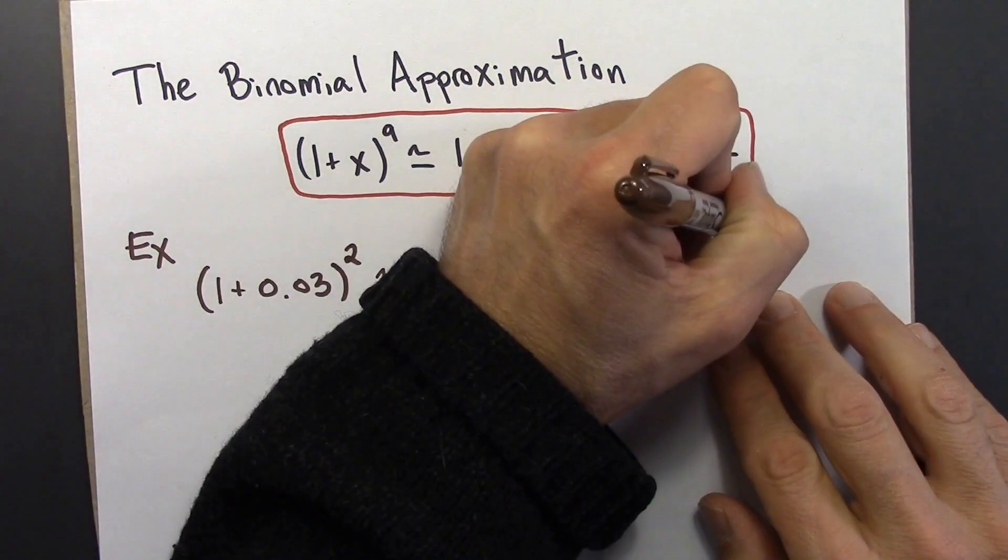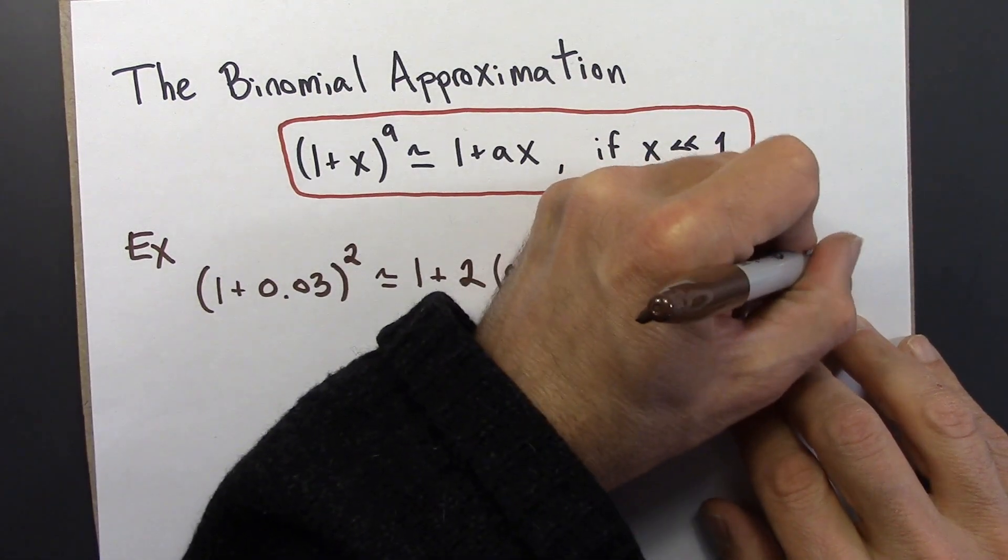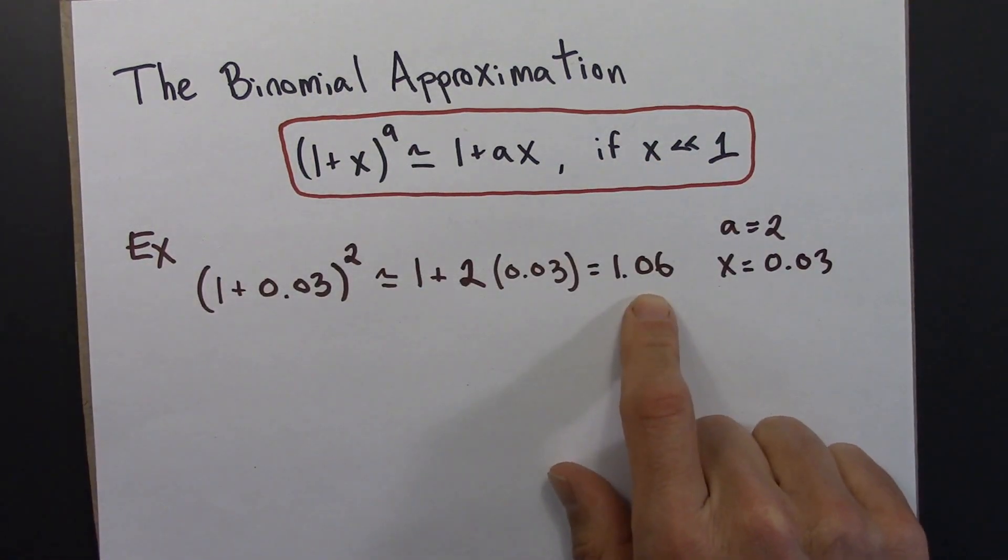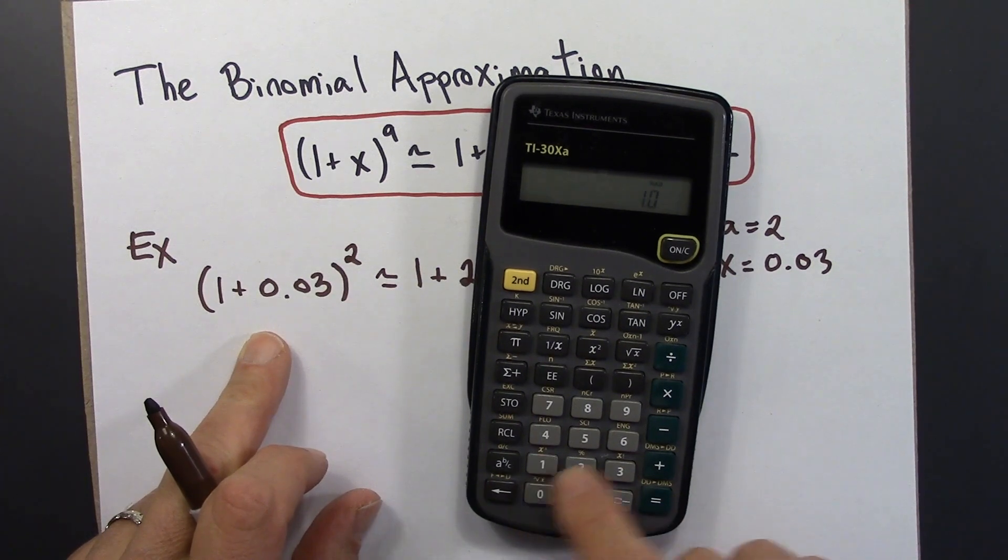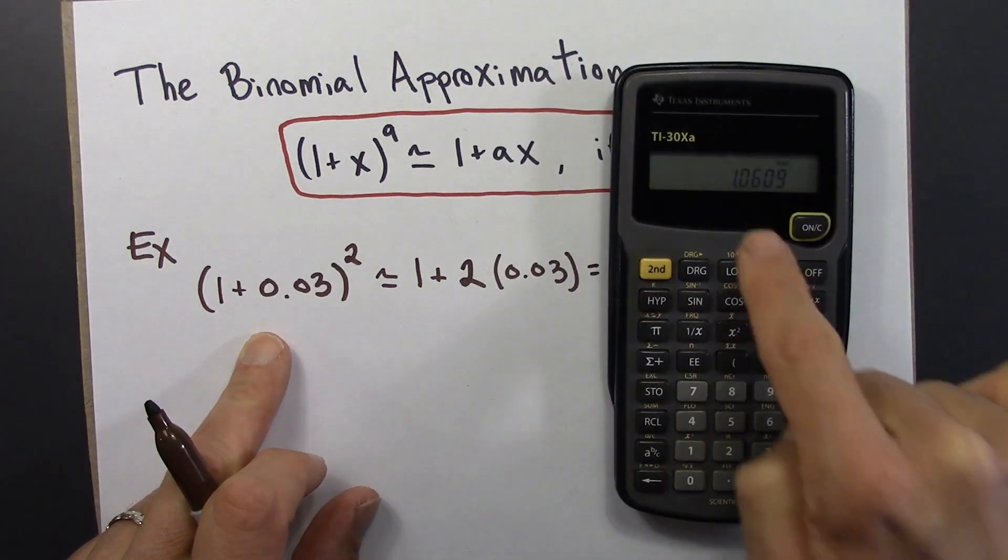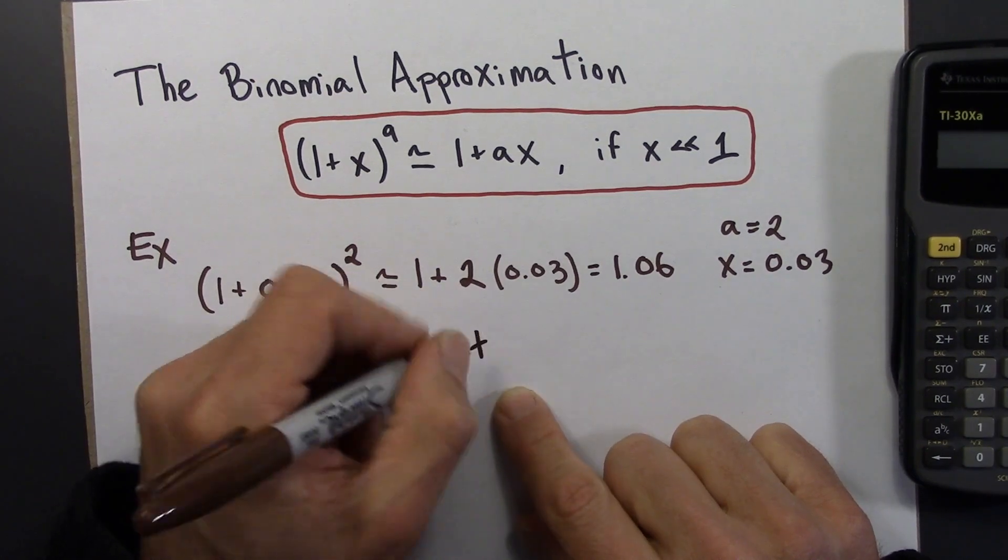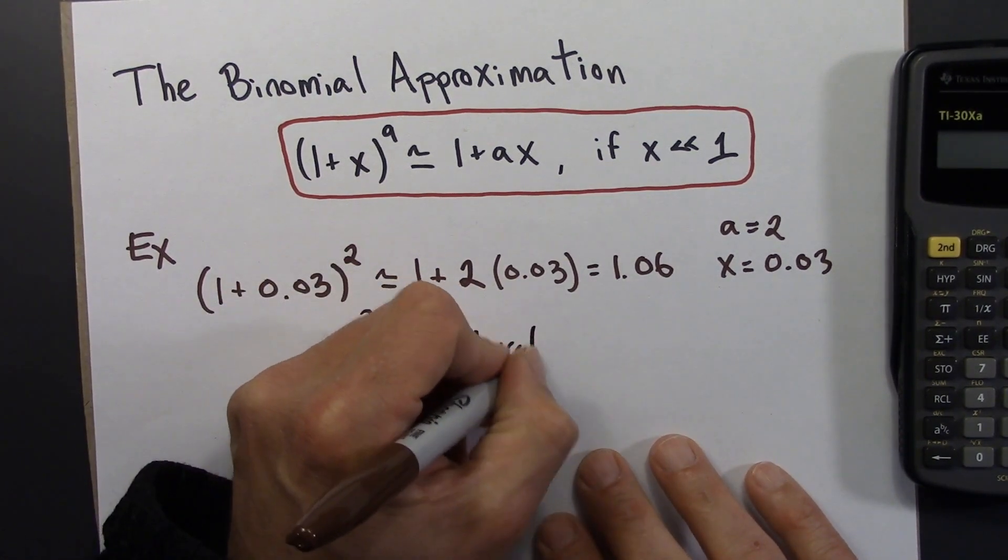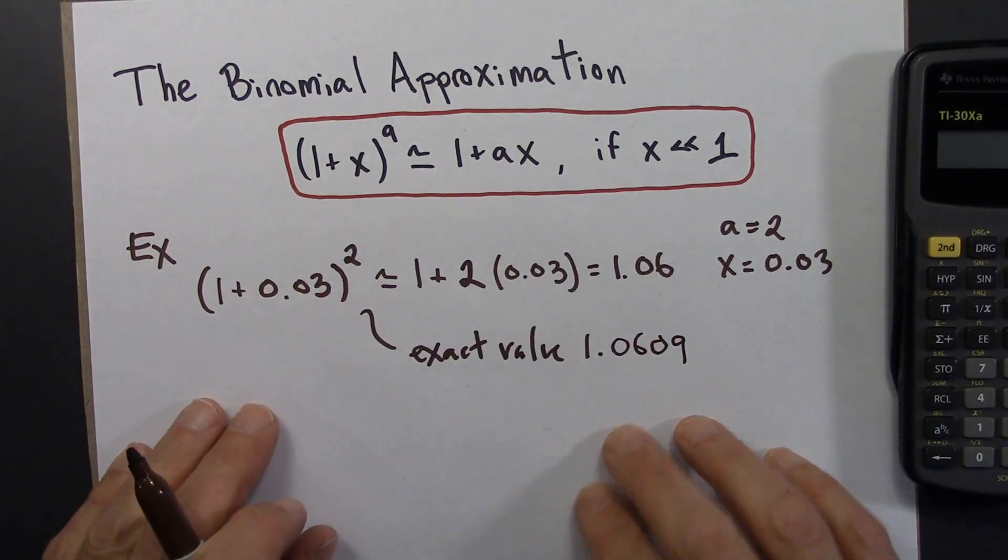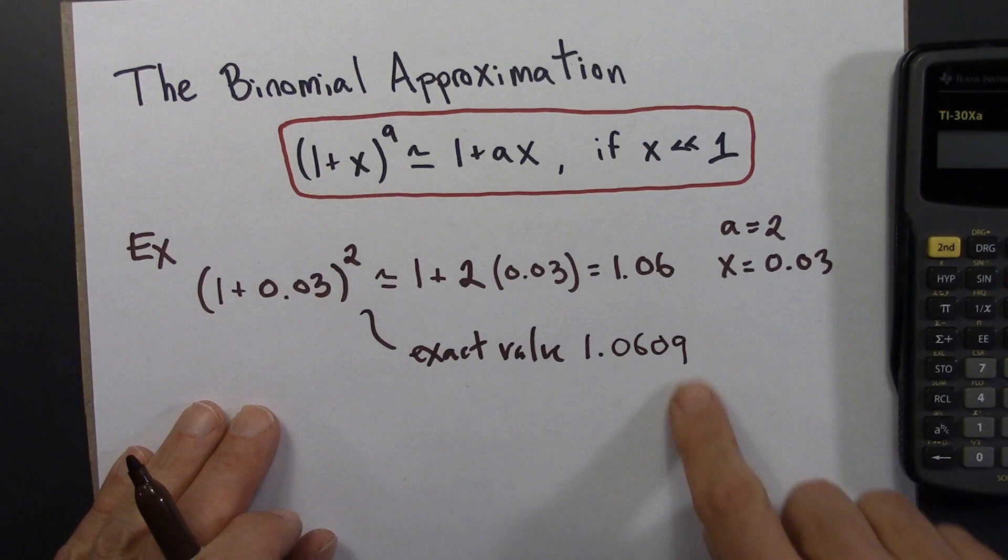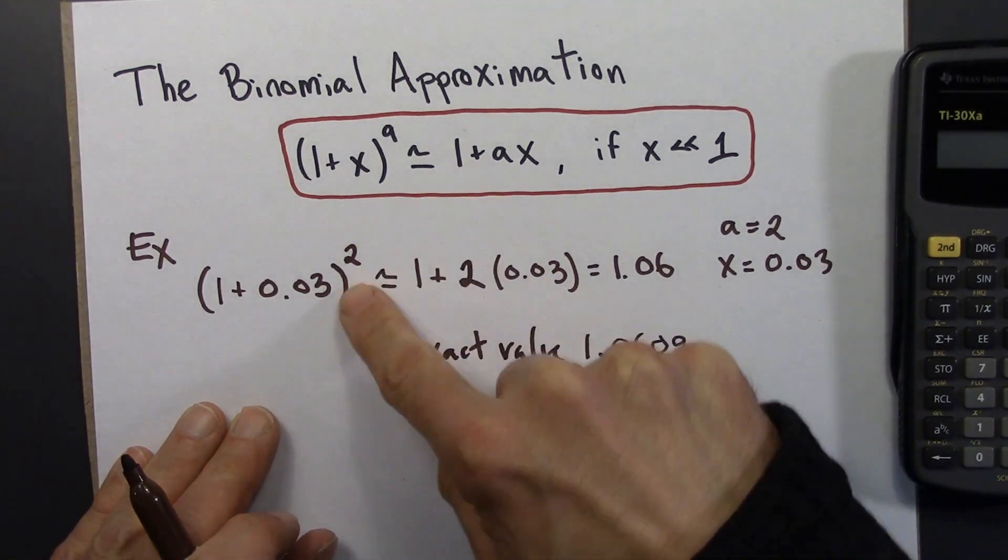And just to write out what I did, I said a is 2 and x is 0.03. So that's an approximate value for this. I could also just do this directly on a calculator. 1.03 squared, and I get 1.0609. So the exact value is 1.0609. So this is a pretty good approximation. We get well within a percent without having to do this squaring business.